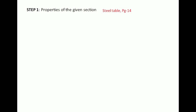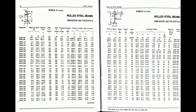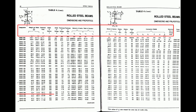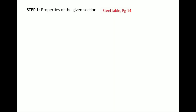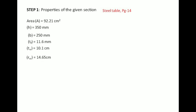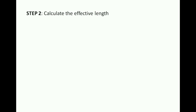Step 1 is to find the properties of the given section from the steel table, page 14. For the section ISHP 350 at 710.2 N/m, all properties are listed: area = 92.21 cm², height = 350 mm, width = 250 mm, flange thickness, web thickness, radius of gyration about x-axis (rxx), radius of gyration about y-axis (ryy), and the minimum radius of gyration r_min.